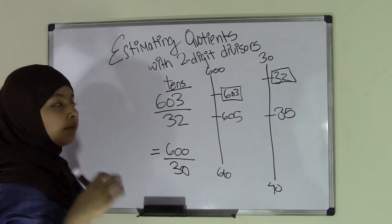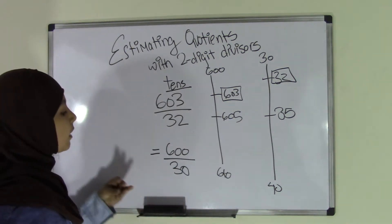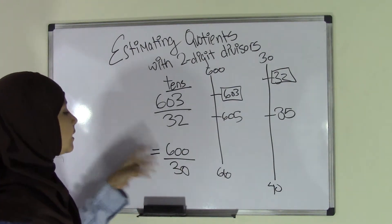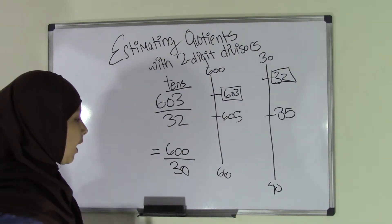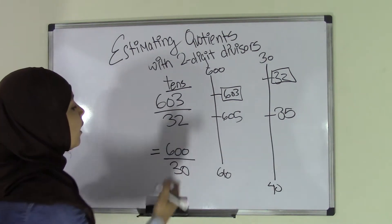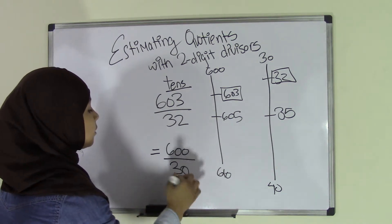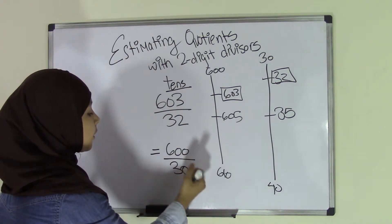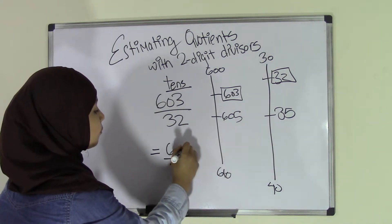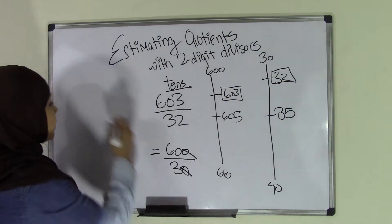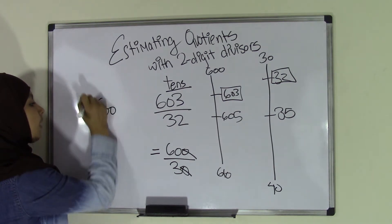Now, in our past few videos, we talked about division of numbers by multiples of 10. So if you can see here, 600 divided by 30. One thing that you can do to make this simpler is that you can trim off the zeros. So since 30 has one 0, we're going to remove one 0 from here, and we're going to remove one 0 from here. So now we're left with 60 divided by 3.